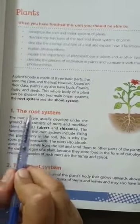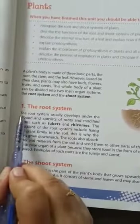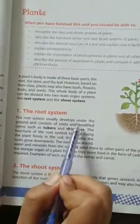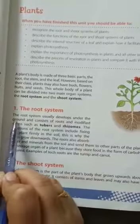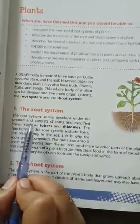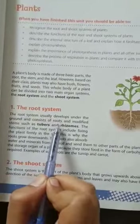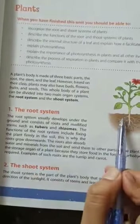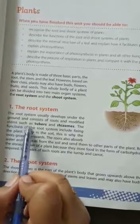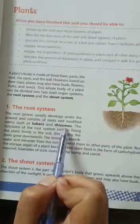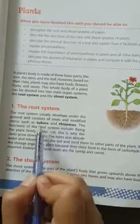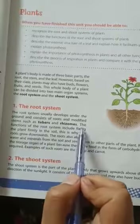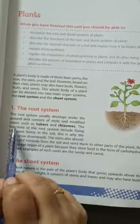The root system usually develops under the ground and consists of roots — roots urdu mein hum inhe jaante hain — and modified stems such as tubers and rhizomes. These are scientific words.